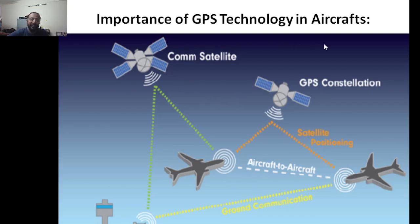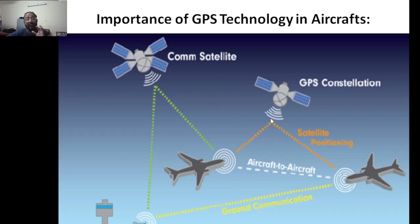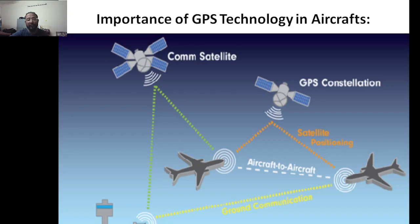The importance of GPS technology in aircraft: if there is no GPS technology, we cannot trace whether flights are on course or whether they are on collision paths with other aircraft, which may lead to flight accidents. GPS is used for communication purposes — aircraft-to-aircraft communications, ground communications, satellite positioning, and air traffic management.